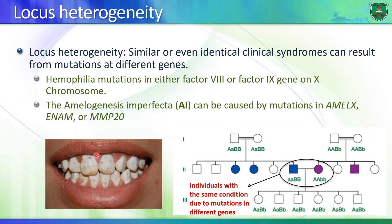Also related to autosomal dominant disorders is locus heterogeneity — the same clinical syndrome can result from mutations at different genes. For example, amelogenesis imperfecta can be caused by mutations in AMELX, ENAM, or MMP20. All of these genes, if defective, cause enamel defects such as caries-like conditions in the individual's teeth.